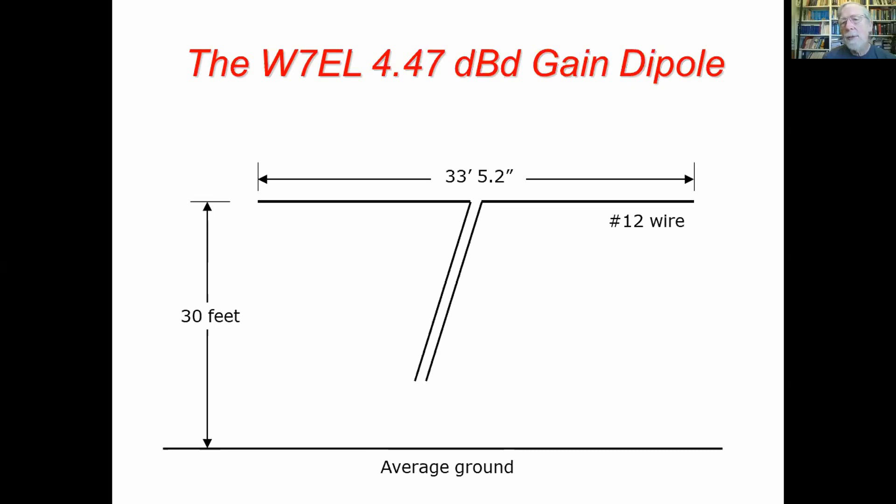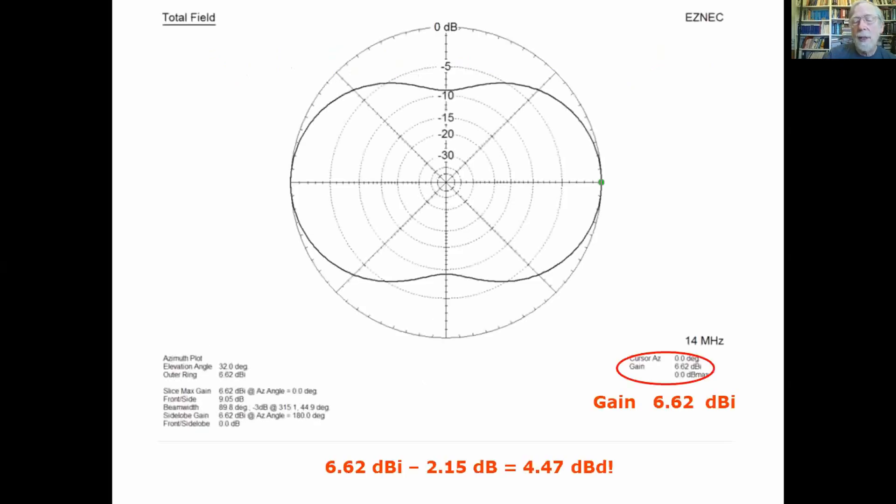The dBd, the 2.15 dB used for dBd, is really the gain of a dipole in free space. Over ground the dipole has got at least 3 dB or approximately 3 dB more gain. It can have a little more or less depending on how close it is to the ground. Mutual coupling will change the current in the antenna some and therefore increase it or decrease it. In this case we've increased it an extra 1.47 dB. So that's how we got the extra gain - by simply putting it over ground. And so that's the first thing that I claimed I would do is make a dipole with 4.47 dBd gain.